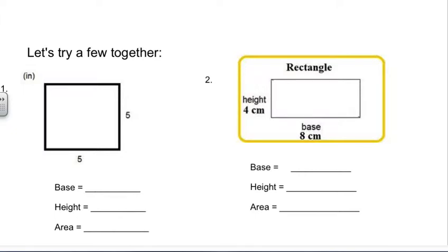Let's try out a few together. So if we look at number one right here, it's in inches. This right here is the base, and this right here is the height. So when it asks for the base, it's five inches. This is the symbol for inches. And the height is also five inches. So the formula was base times height. So it would be five times five equals 25. You want to make sure you label it inches squared.